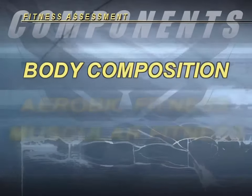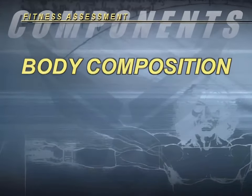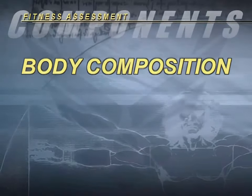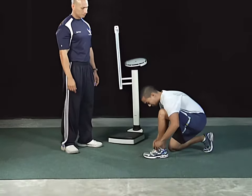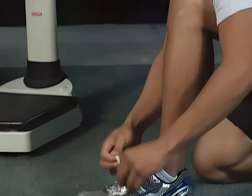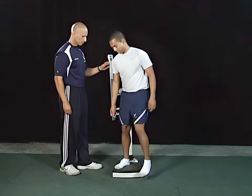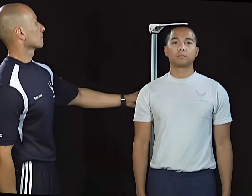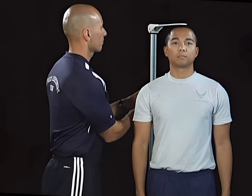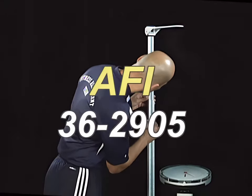Body Composition will be the first component assessed and is composed of height, weight, and abdominal circumference measurements. Height and weight measurements are obtained to satisfy DOD requirements; however, they are not factored into the composite score, because unlike the abdominal circumference measurement, they do not indicate where body fat is stored. Height and weight measurements will be taken at the start of the assessment in accordance with the procedures outlined in Air Force Instruction 36-2905.